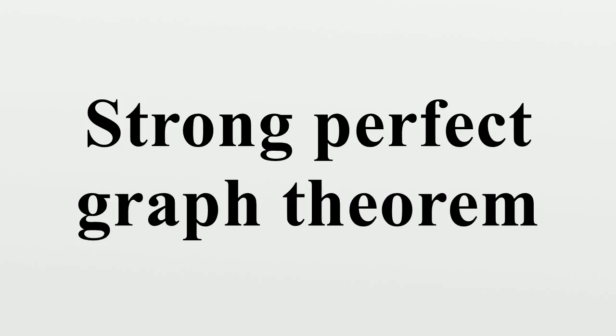A perfect graph is a graph in which, for every induced subgraph, the size of the maximum clique equals the minimum number of colors in a coloring of the graph. Perfect graphs include many well-known graph classes, including the bipartite graphs, chordal graphs, and comparability graphs.